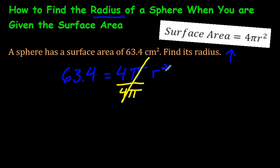1 times r squared is just r squared, which is great, but in math you have to do the same thing to the other side of the equal sign that we did on this side. So we are going to divide this side also by 4π, or 4 times 3.14.